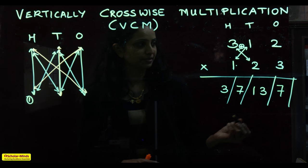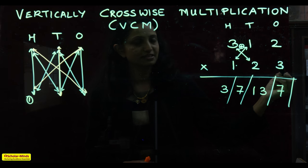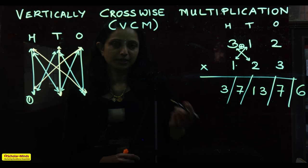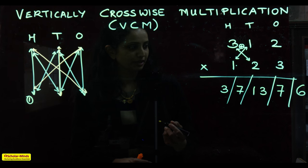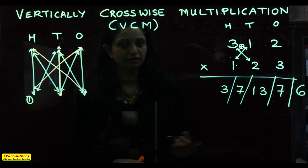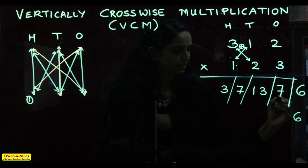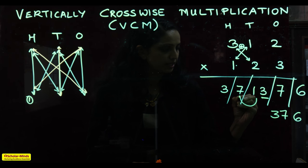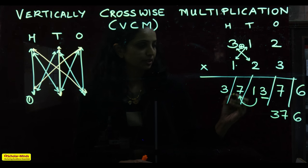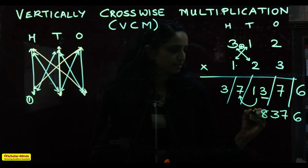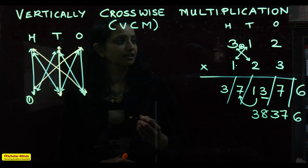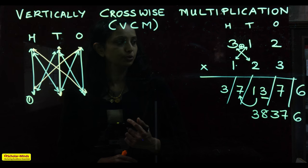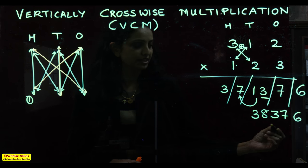The final step is the product of the digits in the ones place: 2 and 3, which is 6. As we learned, only 1 digit is kept in each placeholder. We keep 6, keep 7, and from 13 we keep only 3, carrying the 1 to the next place value: 7 plus 1 is 8. So the final answer for 312 multiplied by 123 is 38,376.